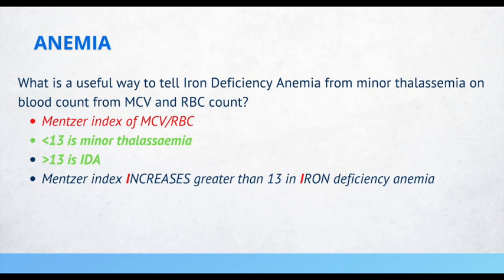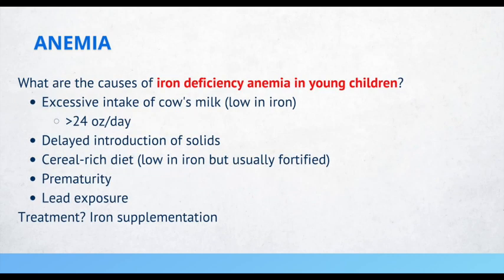A memory trick: the index increases greater than 13 in iron deficiency anemia — think 'I' for index and iron. Some high yield causes of iron deficiency anemia in young children include excessive intake of cow's milk (more than 24 ounces per day), delayed introduction of solids, cereal-rich diet, prematurity, and lead exposure. To treat these patients, give them iron supplementation.